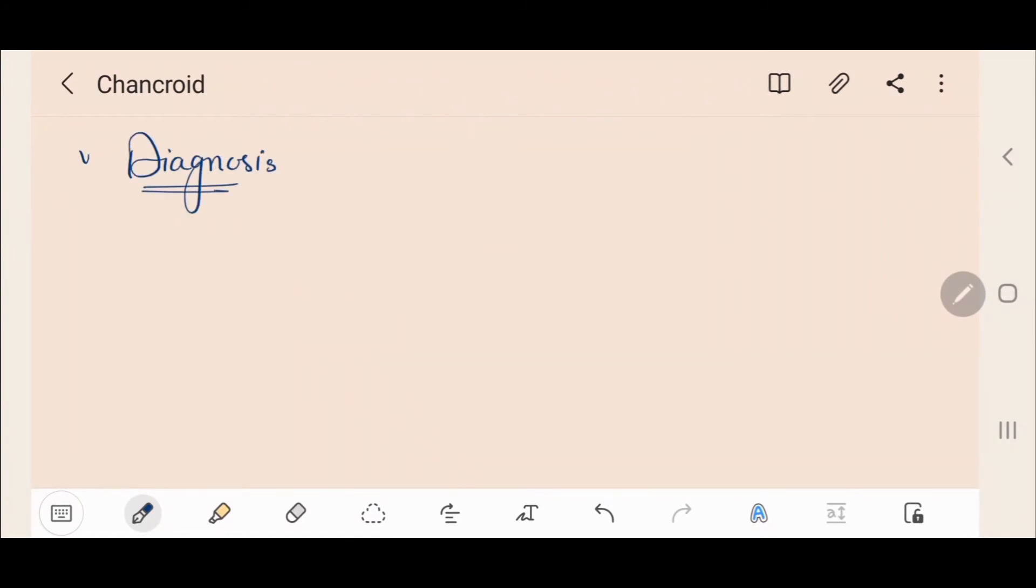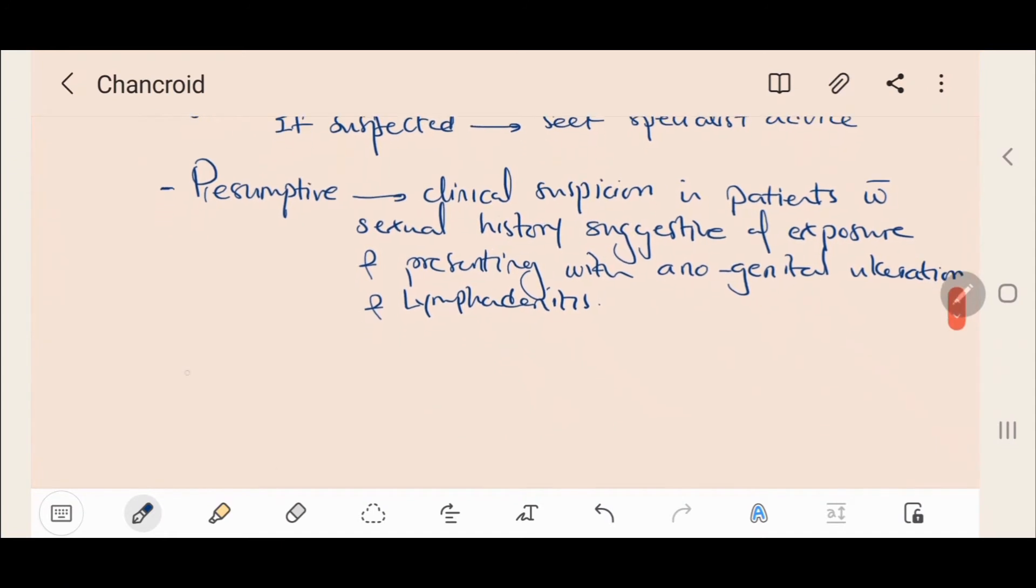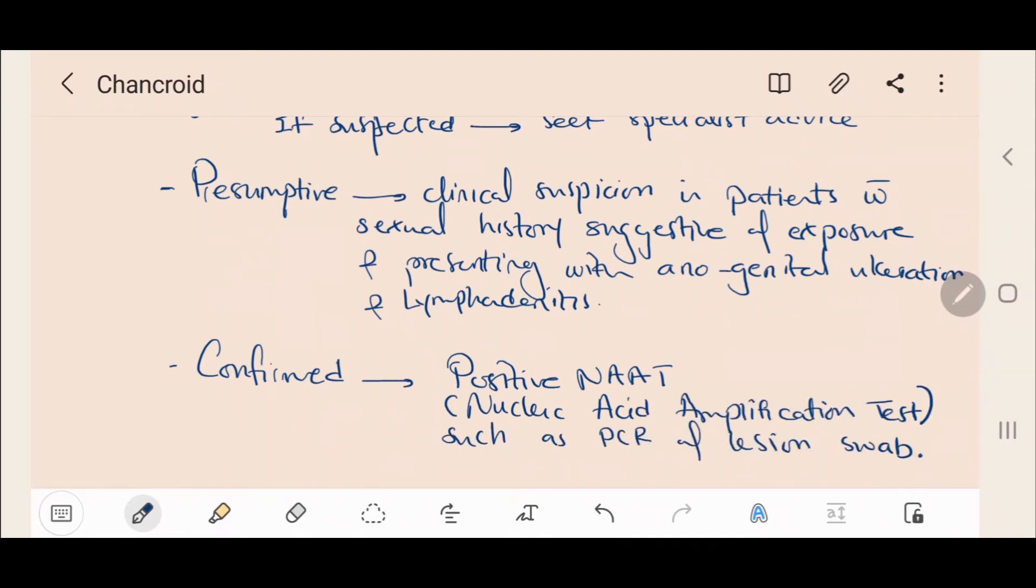How do we diagnose chancroid? If chancroid is suspected, always seek specialist advice. There's a presumptive diagnosis when there is clinical suspicion in patients with sexual history suggestive of exposure and presenting with anogenital ulceration and lymphadenitis. There's also confirmed diagnosis if we have a positive NAAT, nucleic acid amplification test such as PCR of lesion swab.